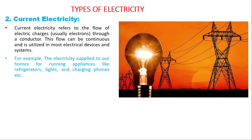The second type of electricity is current electricity, which refers to the flow of electric charges through a conductor. These electric charges are usually electrons — electrons are the charge carriers. Unlike static electricity where electrons don't move, in current electricity electrons move through a conductor continuously.